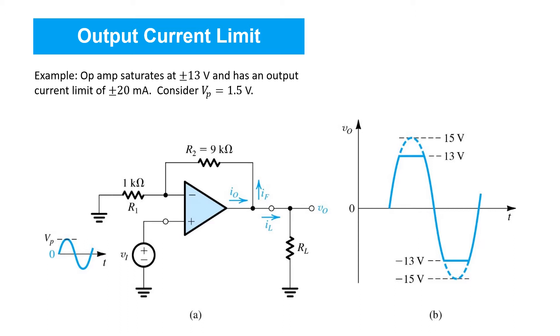In addition to output voltage saturation, op-amps have output current limits that also have to be respected. This is best illustrated by way of example. Here, we've got an op-amp connected in a non-inverting configuration with a gain of 1 plus R2 over R1 equal to 10 volts per volt. And we've applied an input sinusoid at VI with a peak value of 1.5 volts. The op-amp itself saturates at plus minus 13 volts and has an output current limit of plus minus 20 milliamps.